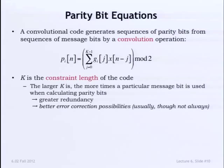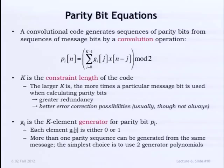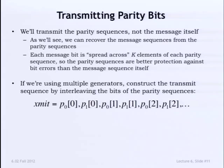The bigger the constraint length, the more message bits are involved in generating a parity bit, so you're spreading it over a large section of what's transmitted. You might expect better error correction properties with larger constraint lengths. We generate the parity bits, then send all the parity bits associated with the computation at time 0, then all the parity bits at time 1, time 2, and so on. In the case of the code used on the Cassini probe, that's a 1-over-6 rate code — computing 6 parity expressions, transmitting 6 parity bits for each message bit.